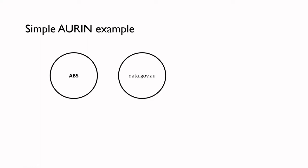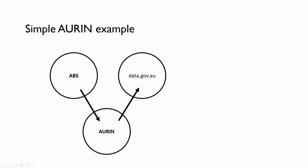ORAN — we might consider a number of different objects, say the Australian Bureau of Statistics and data.gov.au, and how ORAN as an object or an entity would really connect between these. So ORAN would consume data from the ABS and try and make it available to its users in different ways. It would then feed that information back — the metadata side of things and the data itself — out via data.gov.au as an example.